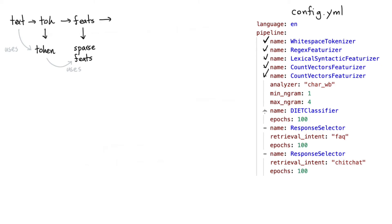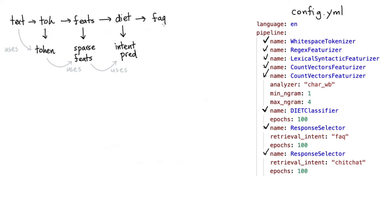After we've generated our features, we move on to the DIET classifier. If we assume there are no entities in this entire chatbot, then we can say that this DIET classifier will give us an intent prediction, and the intent prediction relies on the sparse features. Now the idea is that we have two other steps that follow: a response selector for frequently asked questions, and another one for chit chat — the FAQ step and the chit chat step.